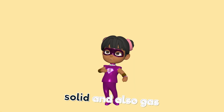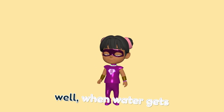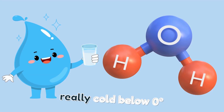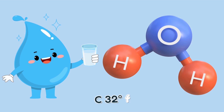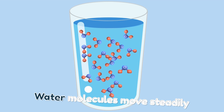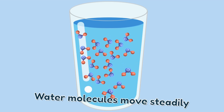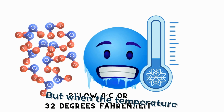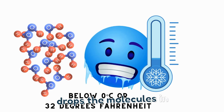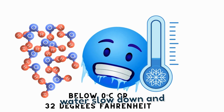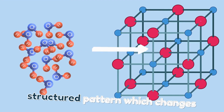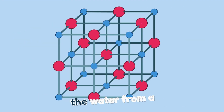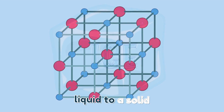Let me tell you how water can be solid and also gas. When water gets really cold — below zero degrees Celsius, or 32 degrees Fahrenheit — something happens. Water molecules move steadily when it is in its liquid state, but when the temperature drops, the molecules in water slow down and lock into a lattice-structured pattern, which changes the water from a liquid to a solid state.